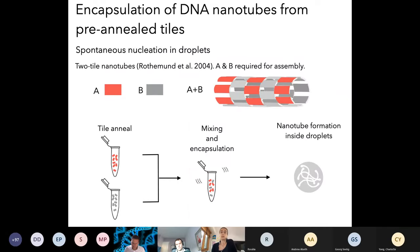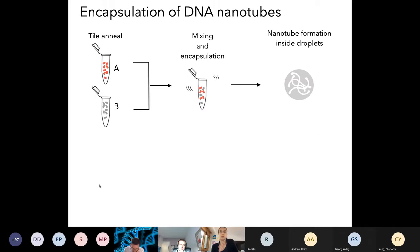On top of the methods that I mentioned now, there's a different thing one can do, which is use nanotubes that assemble from two separate types of monomers. Monomer A and monomer B, this was a design that was published a while ago. Basically, both A and B are needed for the nanotubes to form. This means that one can fold the tiles ahead of time, store them, and then only when they are mixed and encapsulated, they will start forming the nanotubes inside the droplets. Because of this separate folding of the tiles, one can observe assembly from the very beginning, if you're fast enough with the mixing and encapsulation step.